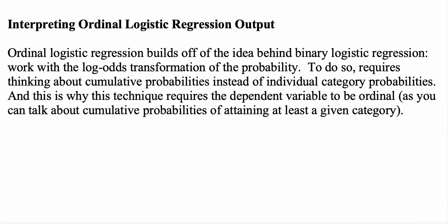For ordinal regression, this requires working with cumulative probabilities instead of individual category probabilities. When you only have two categories, predicting one automatically determines the other. In ordinal regression, we assume you make it up to a particular category, and from that cumulative probability you can derive the rest. This is why the dependent variable must be ordinal — cumulative probabilities only make sense when categories have a defined order.